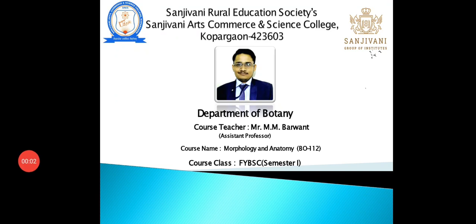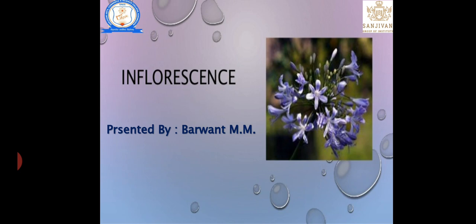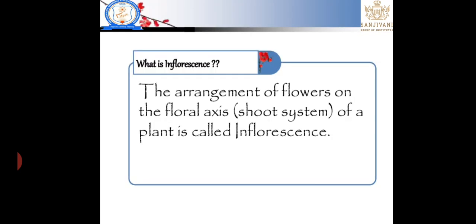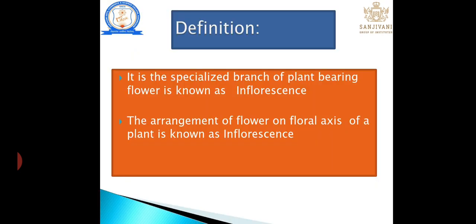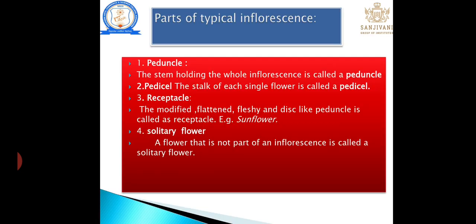Hello everyone, myself professor. Today we are starting a new chapter on the morphology of reproductive parts. The first part is inflorescence. Before learning each concept, we should know what that concept tells us. Inflorescence is nothing but the arrangement of flowers on the floral axis. The specialized branch of a plant bearing flowers is known as inflorescence. Various authors have given various definitions, but the main meaning is the arrangement of flowers on the floral axis.